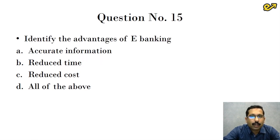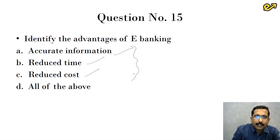Identify the advantages of e-banking. Accurate information, okay. Reduced time, yes. Reduced cost. Whenever time reduces, cost also reduces. Time and cost are proportional to each other. So all these are the advantages of e-banking. So the answer is D, all of the above.